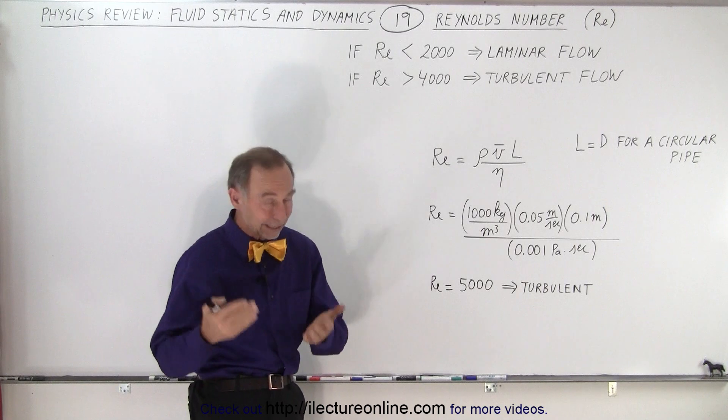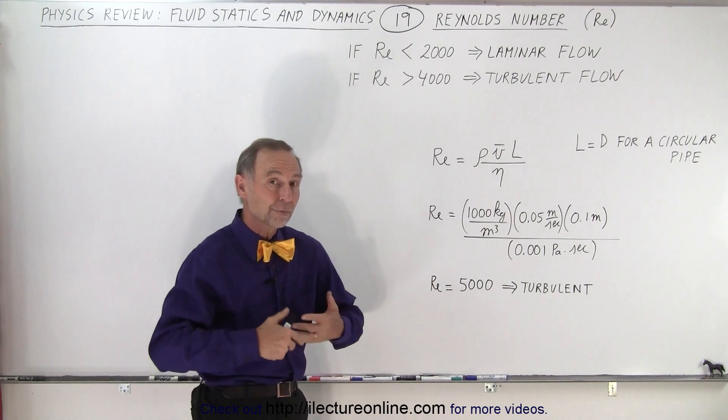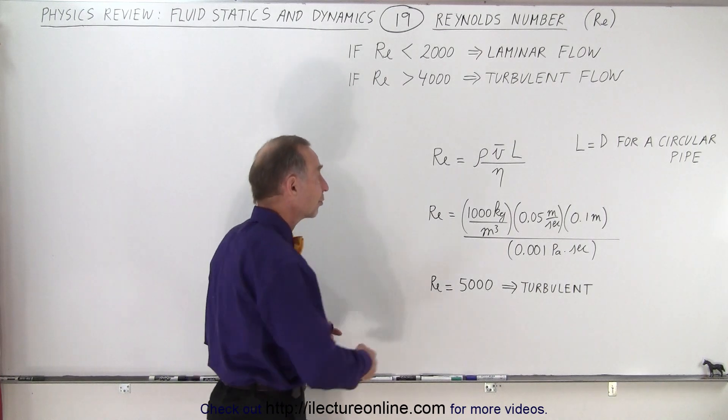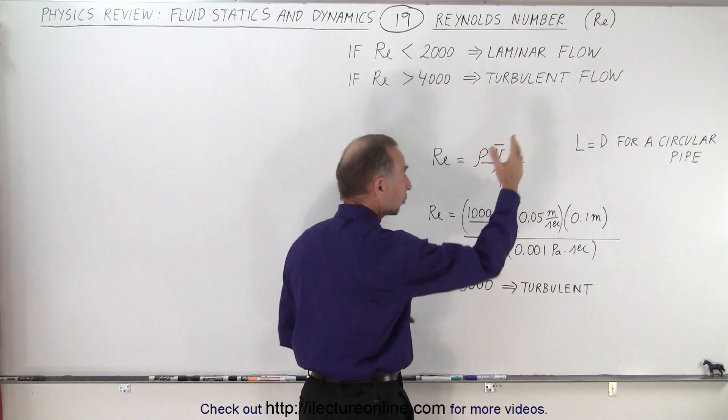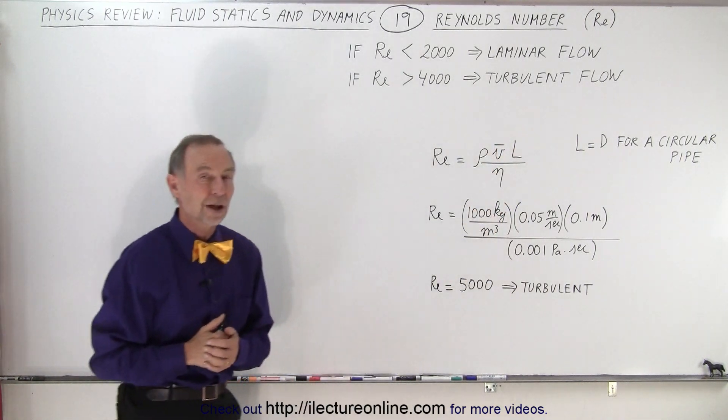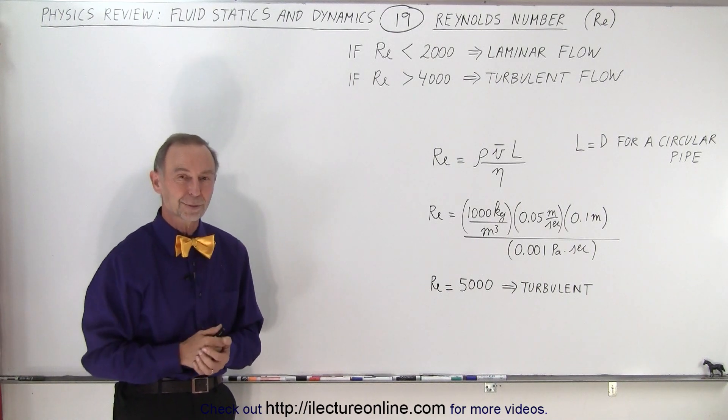Which would be indicative that in this particular case, the fluid flow would be turbulent. In order to make it flow in a laminar sense, we would have to slow down the velocity to get a smaller Reynolds number, just to get a feel for it. And that is how it's done, calculating the Reynolds number.